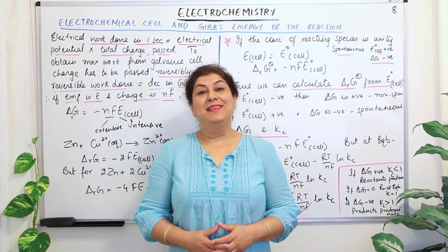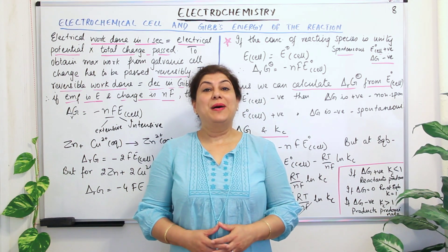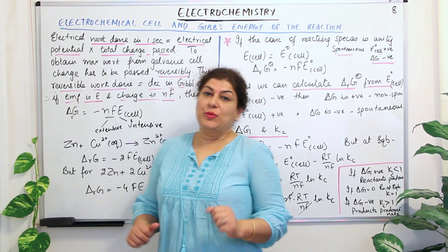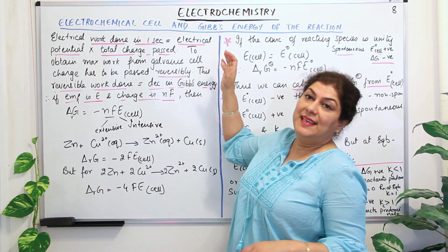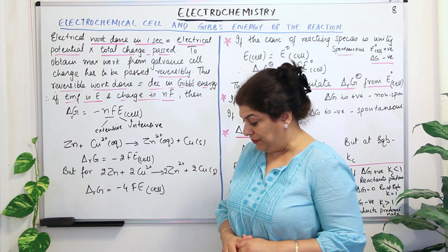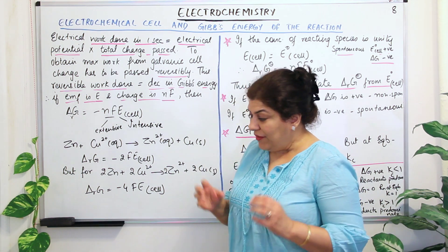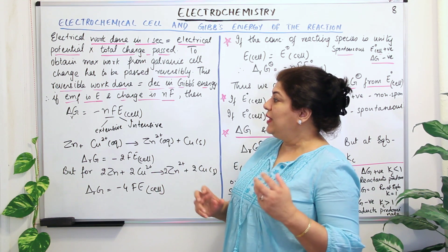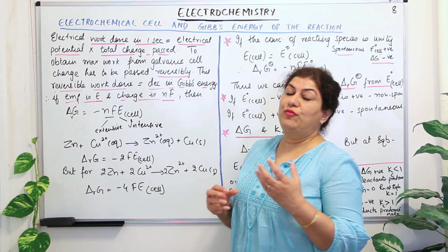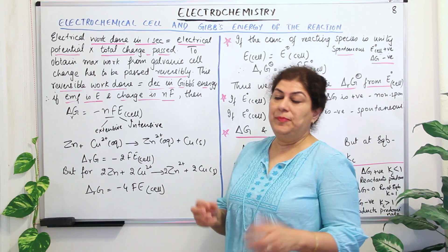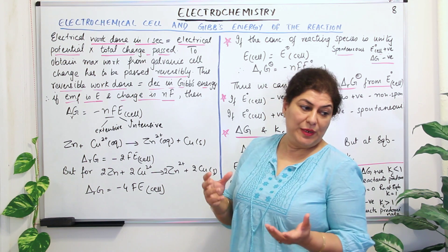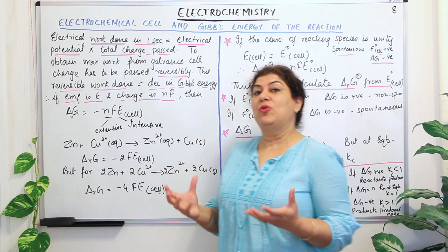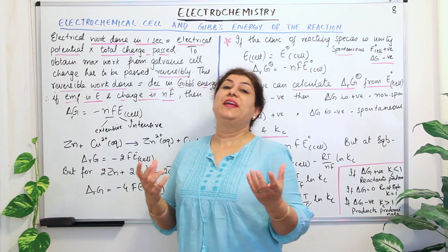Hello, I'm Seema and welcome to part 8 of the chapter electrochemistry. The topic of this video is electrochemical cell and Gibbs energy of reaction. We have now understood what an electrochemical cell is, derived the formula for E cell, and how E° cell at equilibrium is related to K. Now let us talk of free energy.